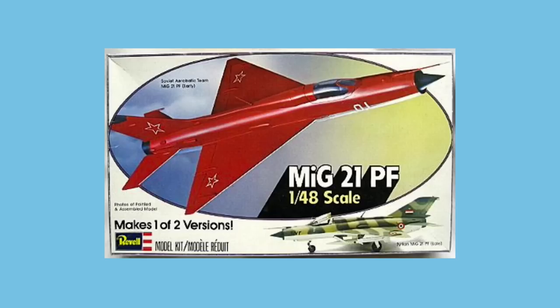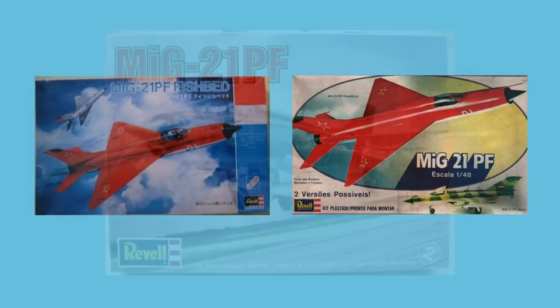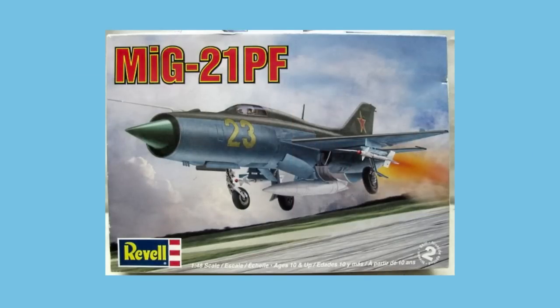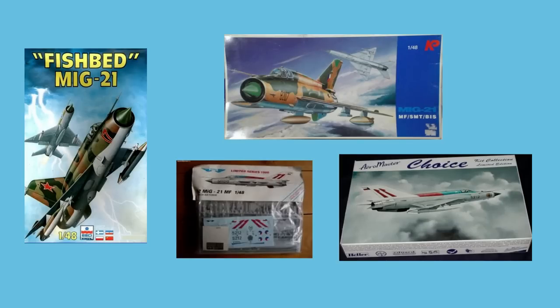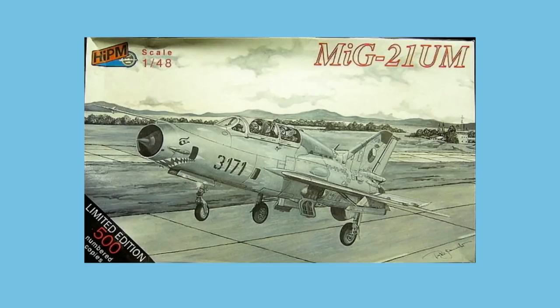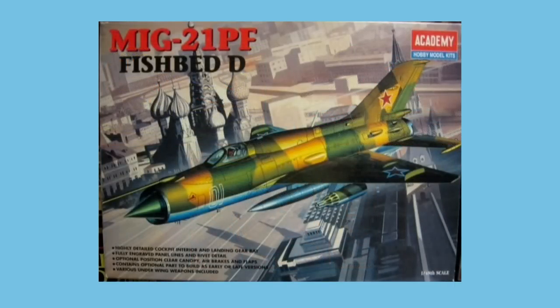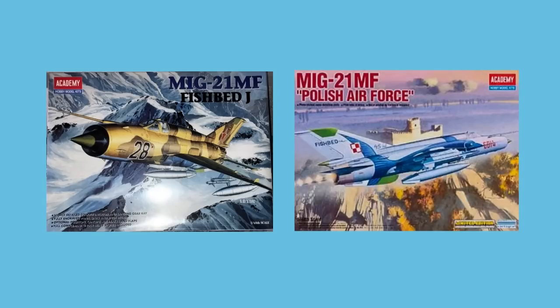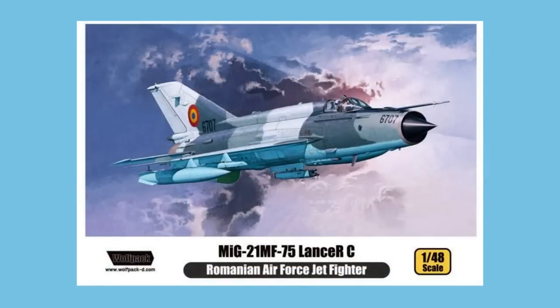Revell were the first to make a 1:48 scale kit of the MiG-21. This appeared in 1977 and was subsequently also sold by Takara and by Nikolay. Revell themselves re-released this kit in 2011. Czech company OEZ made a new tooling in 1988, sold in the same year by Eské, then by KP in 1995, Aeromaster in 1996, and by Aeroteam. It was also the basis for the HIPM kit of the MiG-21UM trainer in the 1990s. AA Models made a kit of the Chengdu F-7 in 1996, available in other boxes with different markings.